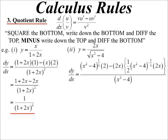Minus, write down the top, 2x. Diff the bottom. That's the bottom. I'm going to have to use my chain rule, because that's x squared minus 4 to the power of a half. So bring down the power, half. Lower the power, minus a half. Diff the inside, 2x.